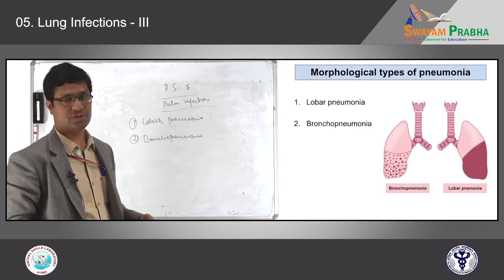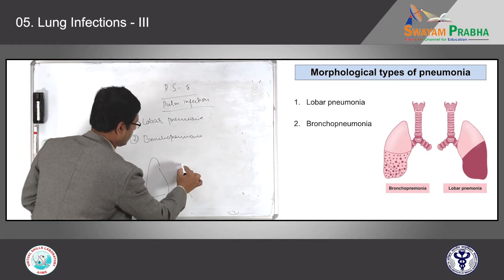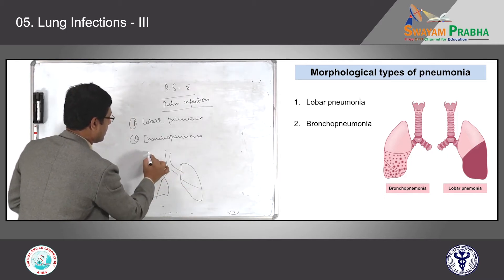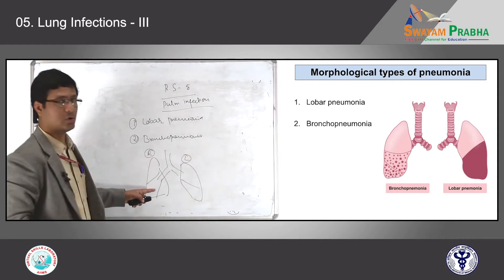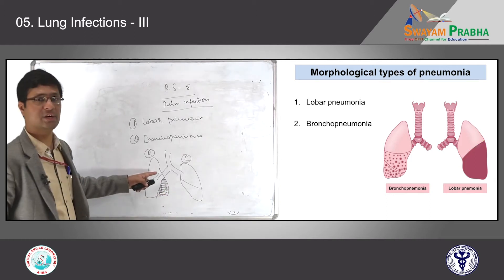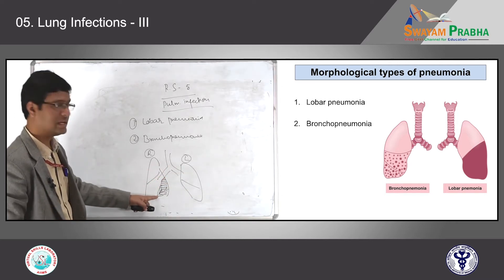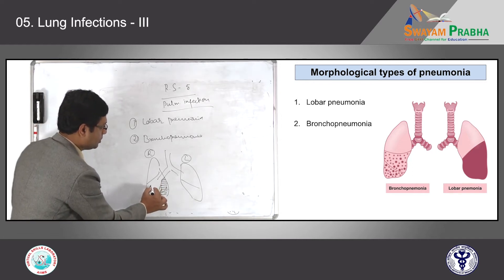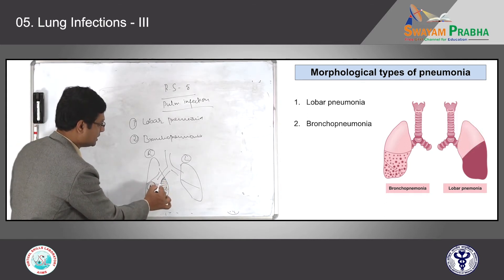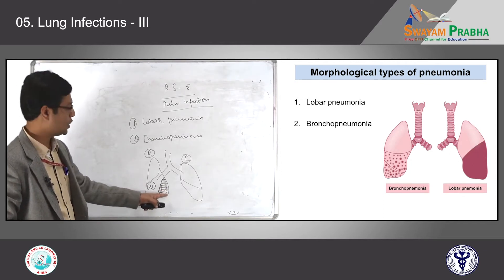You can see in the pictures: lobar pneumonia means you have the right lung and left lung. Lobar pneumonia means any one lobe is completely involved — either the upper lobe, middle lobe, or lower lobe on the right side, or any lobe on the left side. The adjacent lobe is perfectly fine. This infection or inflammation is limited by interlobar septa. When you see this kind of morphology, we call it lobar pneumonia.